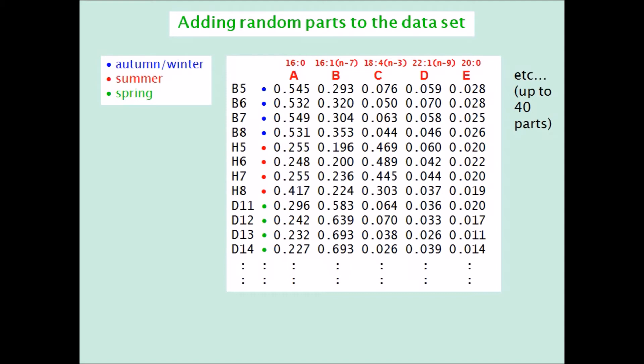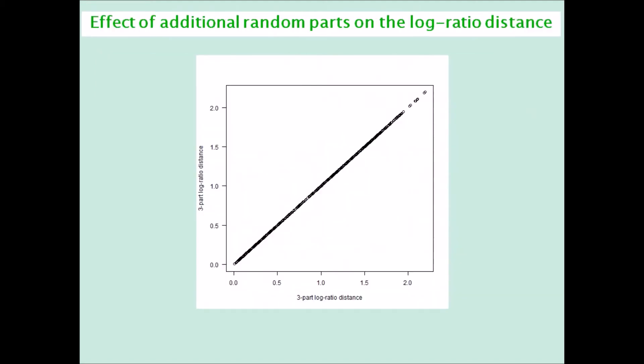The first way is to show what happens to all the log ratio distances between the samples. This first frame shows the original three-part log ratio distances plotted against themselves, so a straight line.